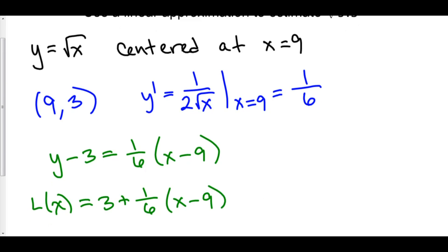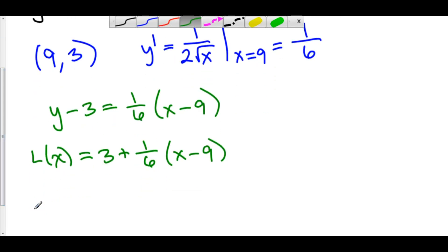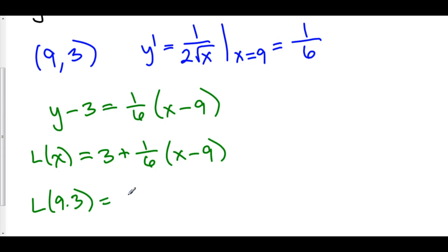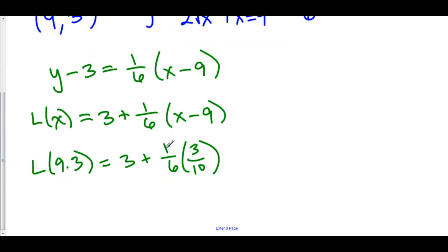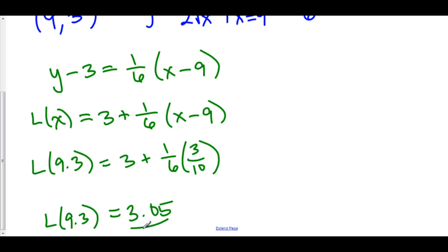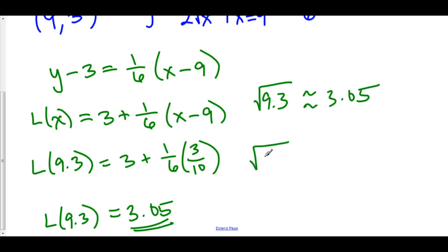Now we're going to plug in 9.3 into our linearization. L of 9.3 is equal to 3 plus 1 over 6 times 9.3 minus 9, which is 0.3. We can rewrite that as 3 over 10 to simplify. 1 over 6 times 3 over 10 is 1 over 20, which is 0.05. So this is 3.05, and that is our approximation for the square root of 9.3. In actuality, the square root of 9.3 is equal to 3.04959.